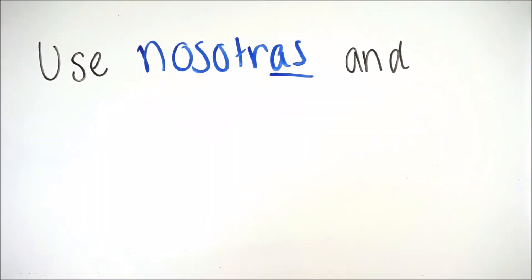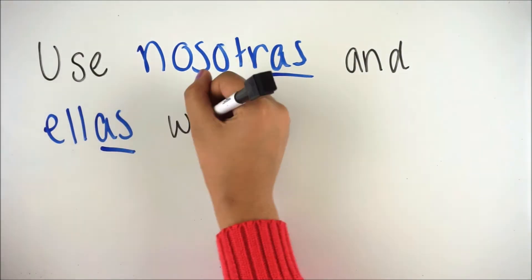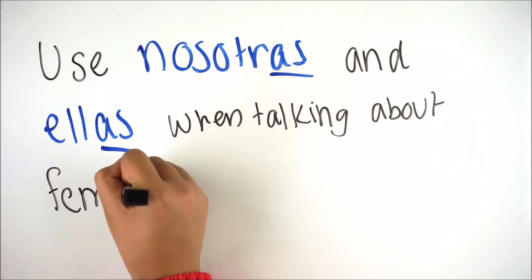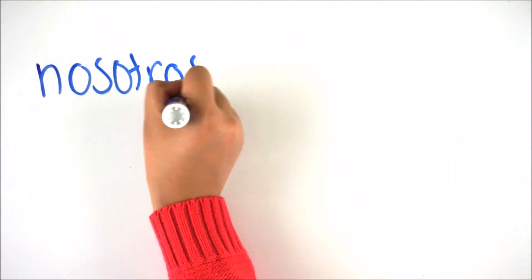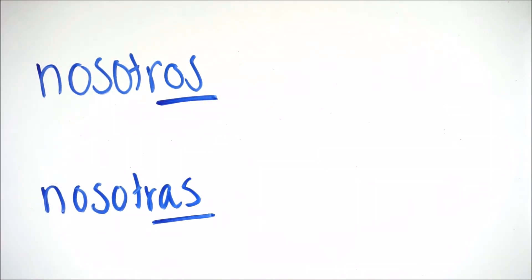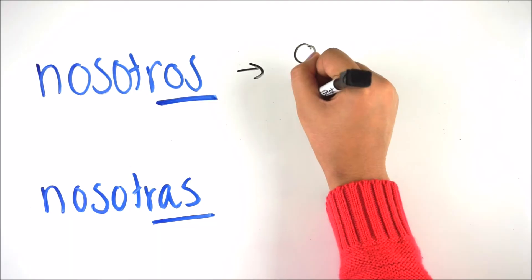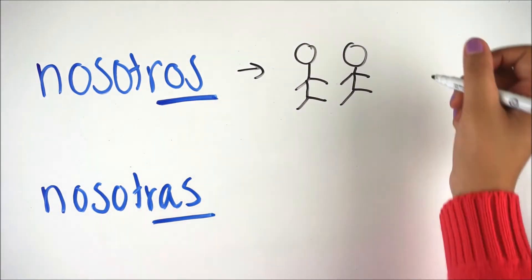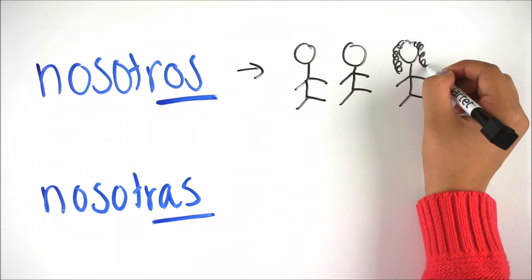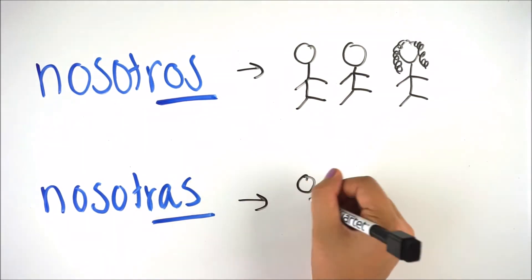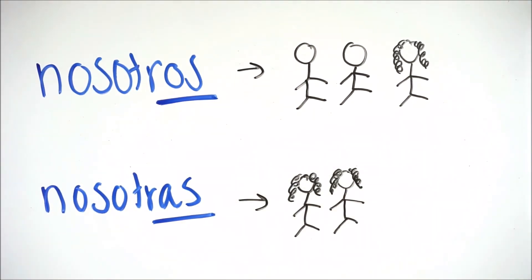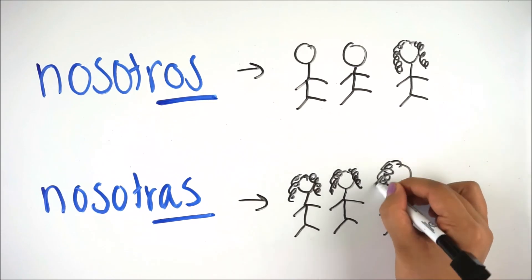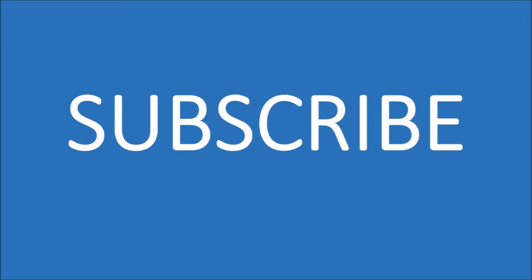You use nosotras with an -as ending when talking about females. For example, if you have a group with nosotros ending in -os versus nosotras ending in -as, you use nosotros if there are two boys and one girl — even if there's one girl, it's nosotros. Nosotras is just for all girls. Thank you, and please subscribe to this channel.